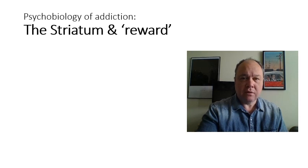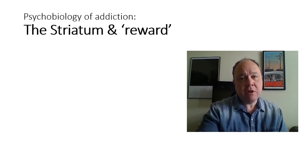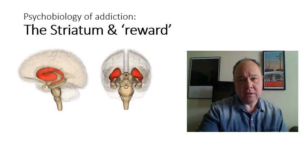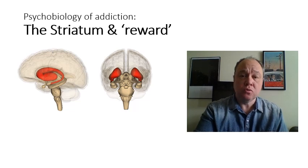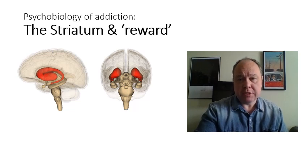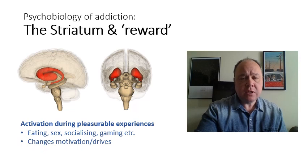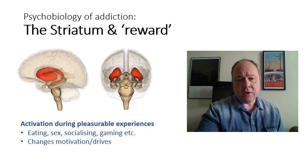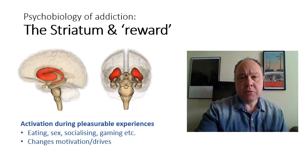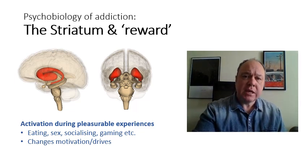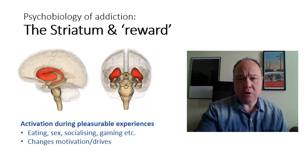If we look at the brain and what's important in addiction, the area most often looked at is the striatum. This is seen as the area of the brain that responds to what's called reward or pleasurable experiences — things that make us feel good or stop us feeling bad. This can involve things such as eating, sexual behaviour, socialising, gaming, gambling, and social media. The striatum also sends a signal to other parts of the brain to guide us towards seeking out those behaviours in the future.